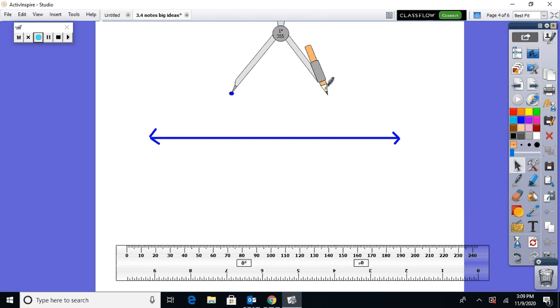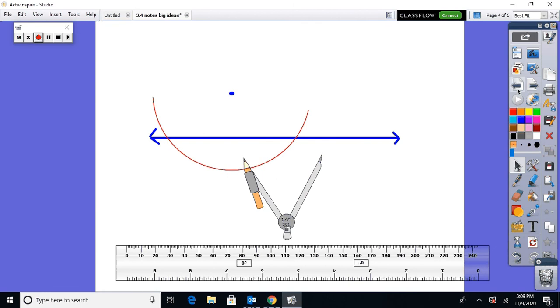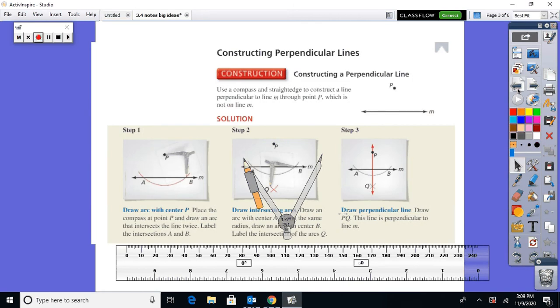So the first thing we want to do, put your compass setting on the point and draw an arc so that you intersect the line below in two locations. So there's one hit of the line, and there's the second hit. Now that was your first step. Draw an arc with center of P. Now your second step is, from the intersection, you want to draw a point that meets below. So draw an arc with center of A using the same radius.